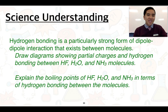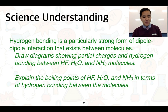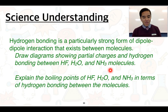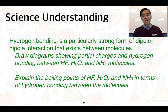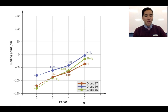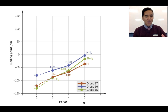The explanation has to do with hydrogen bonding. Hydrogen bonding is a particularly strong form of dipole-dipole interaction that can exist between molecules. This graph shows the boiling points of some group five to seven hydrogen compounds. Without knowledge of hydrogen bonding, you might expect boiling points to increase in a relatively linear fashion.